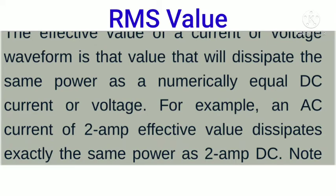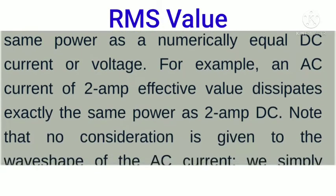An AC voltage or current that numerically equals a DC current or voltage is called the RMS value. For example, an AC current of 2 ampere effective value dissipates the same power as 2 ampere DC.